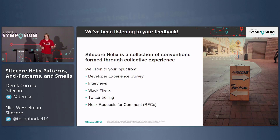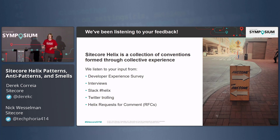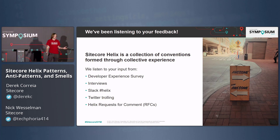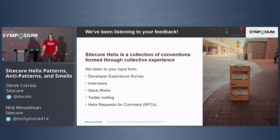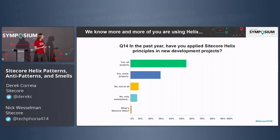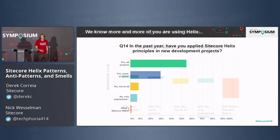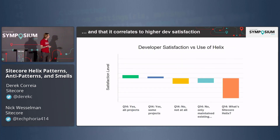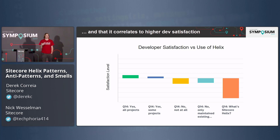For the last year in particular, since I've taken on this role, I've really tried to tap into your experiences through our developer experience survey, through interviews directly with partners, developers, and customers. The Helix channel on Slack has had some good discussions, and we've introduced what we call the request for comment process with Helix, where we put issues on the Helix docs GitHub and allow you to comment on potential changes. Based on preliminary results so far this year, use of Helix is actually going up — more than 80 percent of you are using it on some or all of your projects.